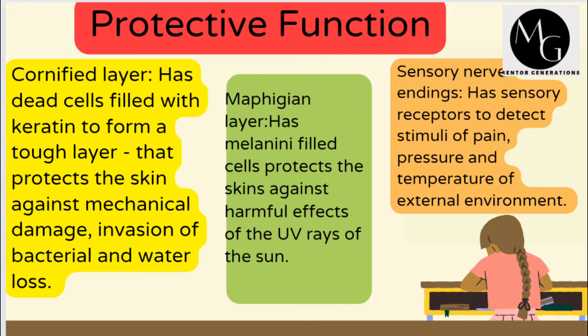The other protective structure is the Malpighian layer, which has melanin-filled cells that protect the skin against the harmful effects of UV rays from the sun. The sensory nerve endings also have sensory receptors to detect stimuli of pain, pressure, and temperature from the external environment, enabling the skin to give the correct response for protection so that it is not injured further.